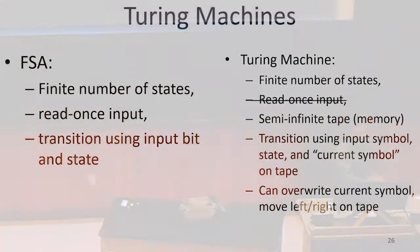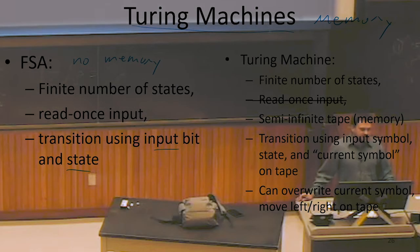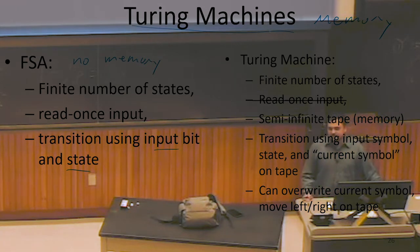The next thing we're going to talk about is Turing machines — everything we might desire. The advantage Turing machines give us is memory. Finite state automata can only transition using the current input bit and the current state, so they have no memory. We don't remember how we got to where we were; we just know that we're there now. Turing machines, though, have memory.